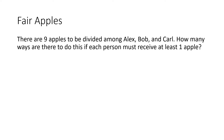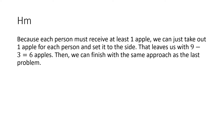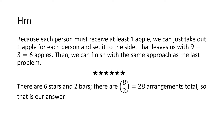There are nine apples to be divided among Alex, Bob, and Carl. How many ways are there to do this if each person must receive at least one apple? This problem looks very similar to the last one, but it's not. Because each person must receive at least one apple, we can just take out one apple for each person. That leaves us with 9 minus 3 equals 6 apples. Then we can finish the same way as last time: there are 6 stars and 2 bars, 6 plus 2 is 8, and 8 choose 2 is 28, so that is our answer.